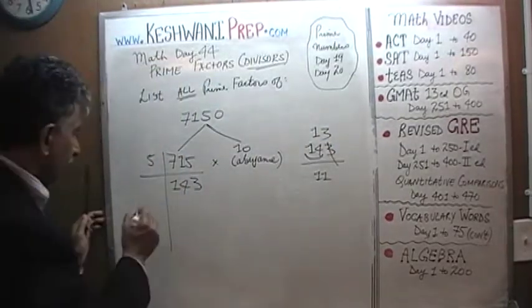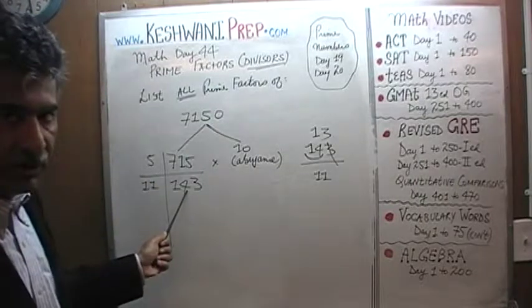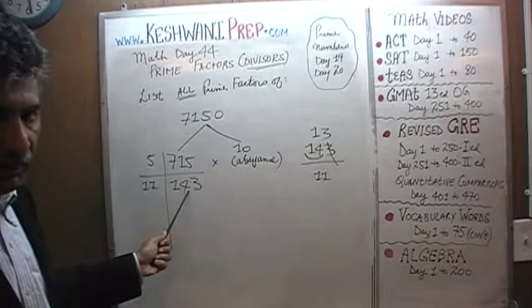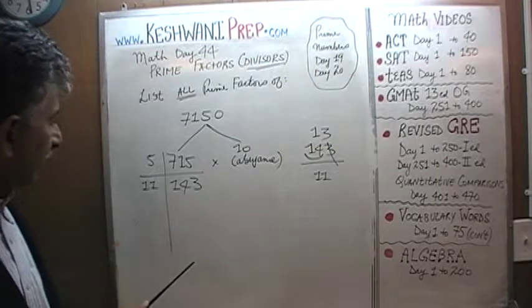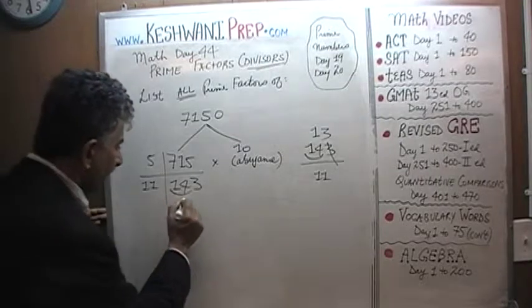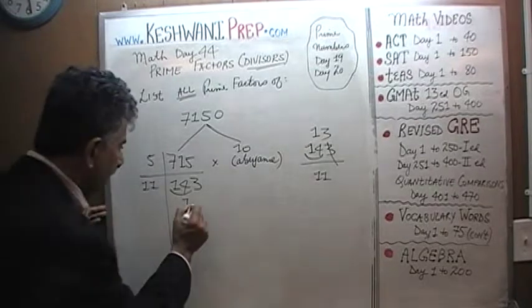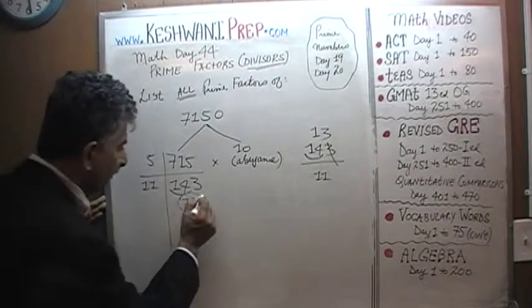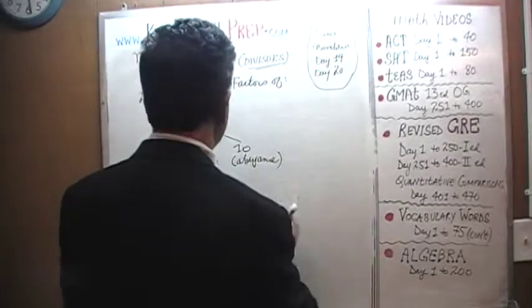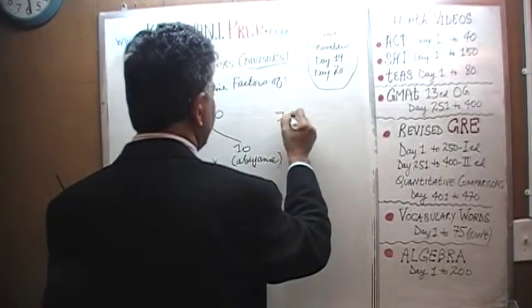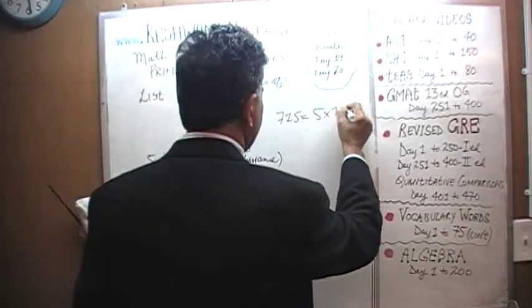We are dividing by 11 because we have already determined that 143 cannot be divided by 2, 3, 5, or 7. The next prime is 11. 14 has one 11; the remaining 3 goes and joins the 3 to become 33, and 33 has three 11s. Since 13 is a prime number, that's where the story ends. So 715 can be written as 5 times 11 times 13.